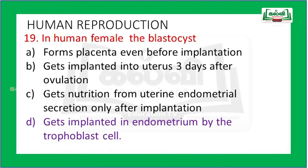In the human female, which statement is correct? The blastocyst gets implanted in the endometrium by the trophoblast cells. After several mitotic divisions, the blastocyst forms an outer layer called the trophoblast and an inner cell mass. The trophoblast gets implanted in the endometrium. So D is the correct answer.